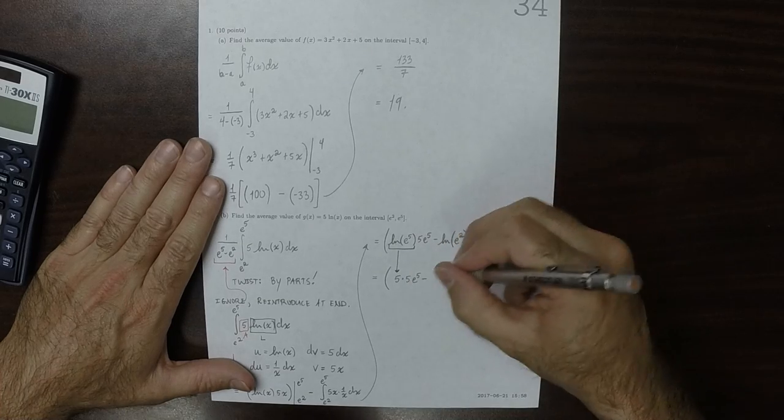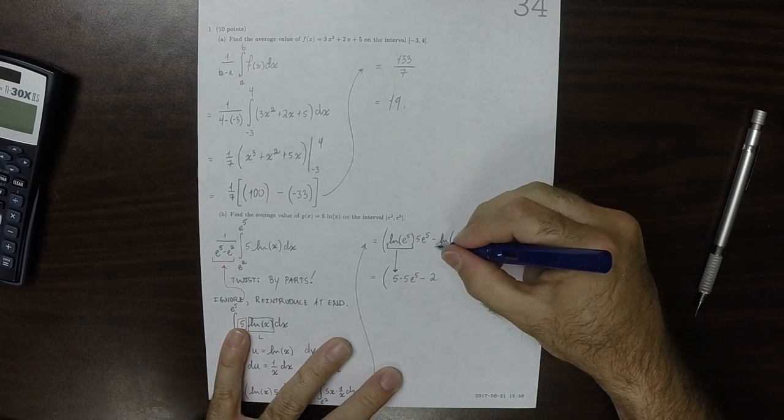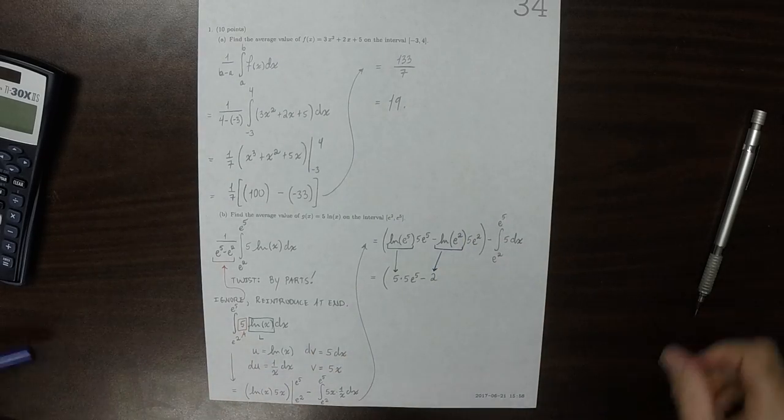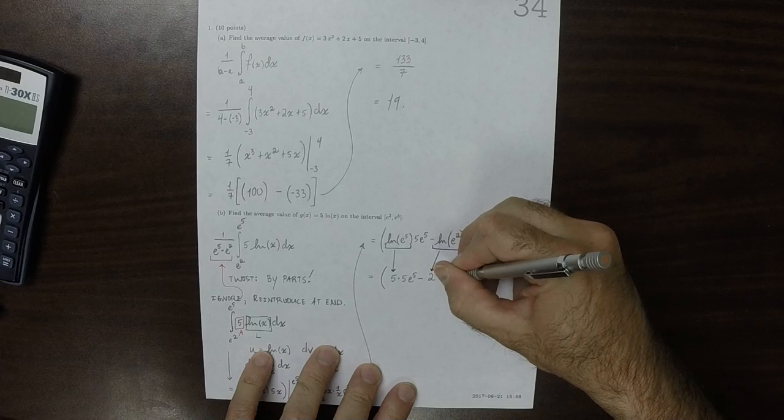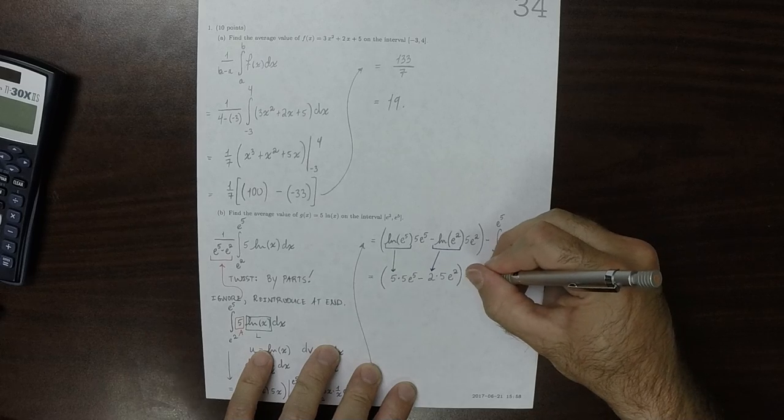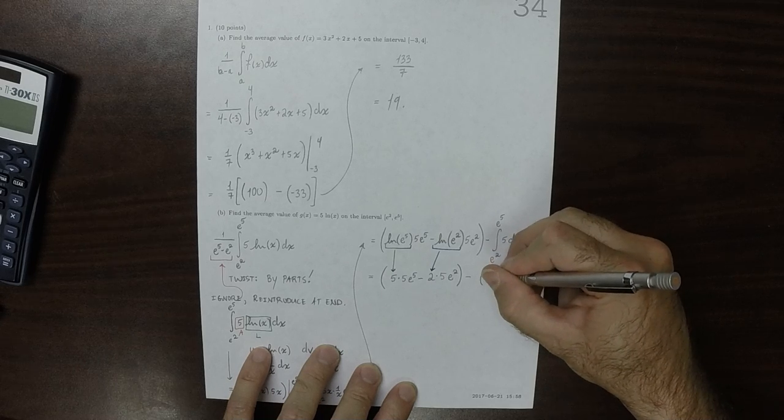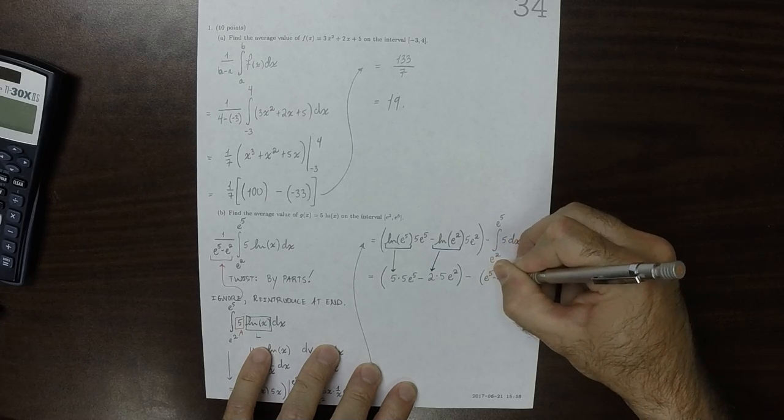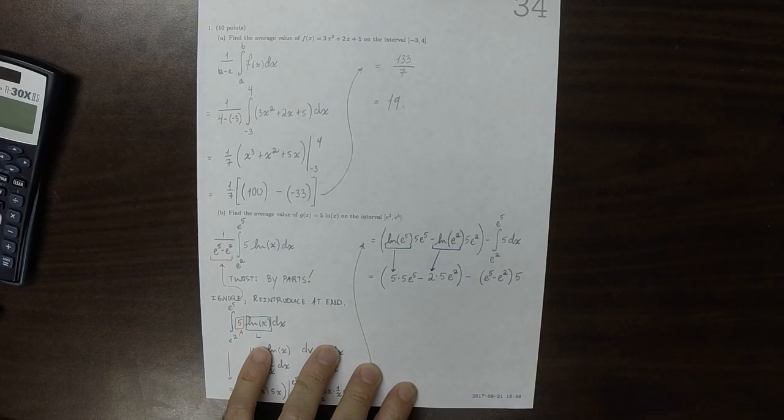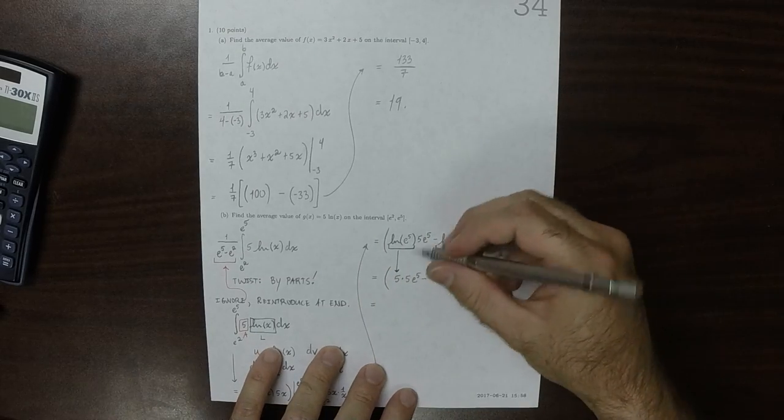And then minus the log of e to the 2, that's 2. So e to the 5 minus e to the 2, and then minus that integral is base times height. So e to the 5 minus e to the 2 is the base, e to the 5 minus e to the 2, and 5 is the height, and then can we simplify this? Probably a little bit. This would be,